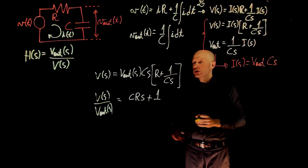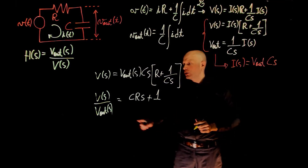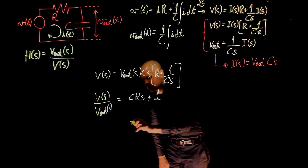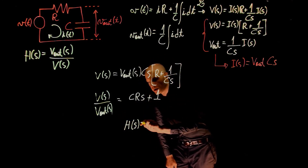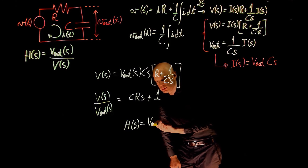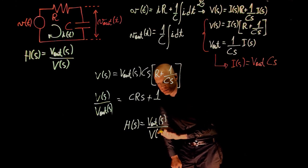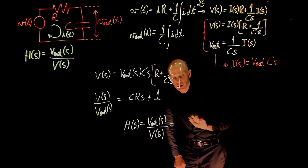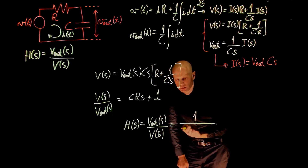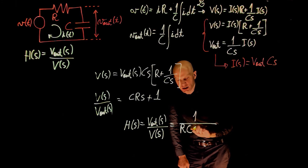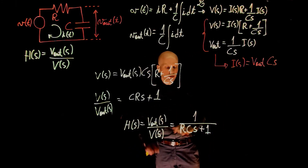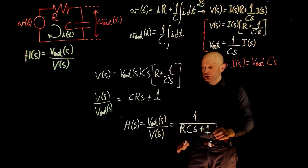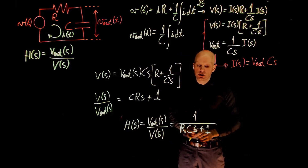Since we are looking for the transfer function, we need the output divided by the input, so our transfer function is the inverse of this. H of s equals the output divided by the input, which is simply 1 over RCs plus 1. This expression gives the relation between the input and the output of the system.